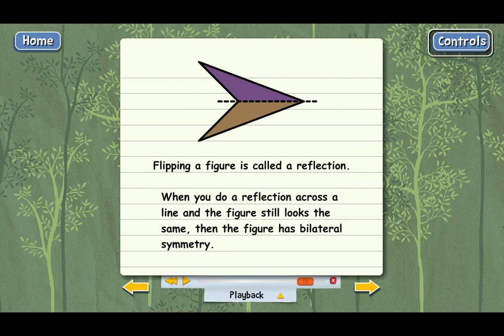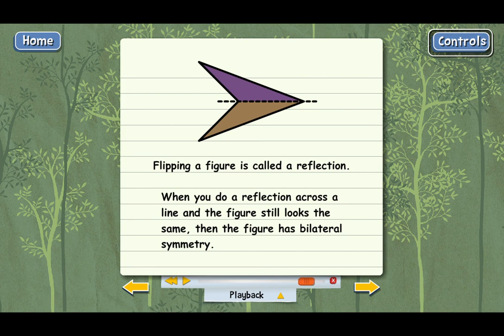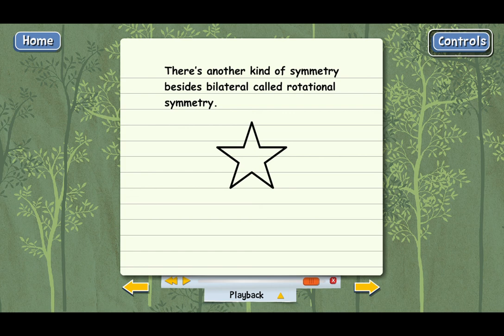There's another kind of symmetry besides bilateral that I should tell you about. It's called rotational symmetry. Let's look at the star again. What if, instead of flipping this over a line, what if we rotated it like this? The star doesn't change at all. It's exactly the same shape as it was before. When you can rotate a figure and it doesn't change shape, then the figure has rotational symmetry.